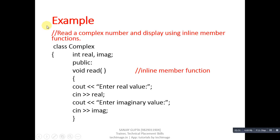Now, an example of an inline function. This program reads a complex number and displays it using inline member functions. This is the complex class. It has two data members: real and imaginary, both private by default. Then in the public section, there is a function called read, which reads the real part and imaginary part from the user. This comment shows that this is an inline member function because the definition is provided inside the class.